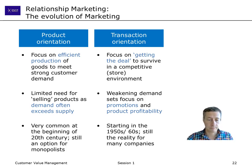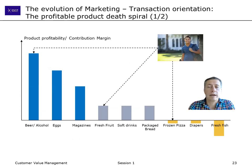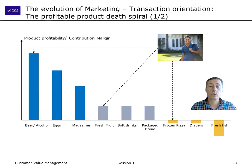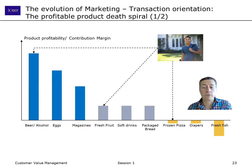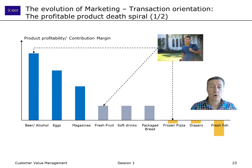A very common analysis conducted at that time, and still today, is the product line profitability analysis. You take all the different products a supermarket sells — beer, eggs, magazines, fresh fruit, soft drinks — and calculate the profitability of each. You might find that you earn a lot on beer and eggs but relatively little on fresh fish. Why? Fresh fish has a very limited shelf life, needs constant cooling, and probably requires special personnel to sell it, so the profit margin is much lower.